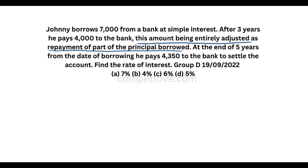Johnny borrowed 7,000 from the bank. After 3 years, he pays 4,000 to the bank. This amount being entirely adjusted as repayment of part of principal borrowed. Then he pays the balance to the bank.